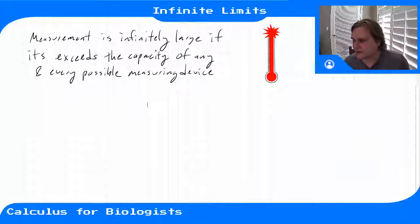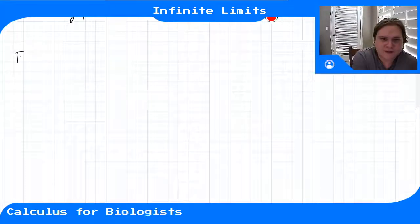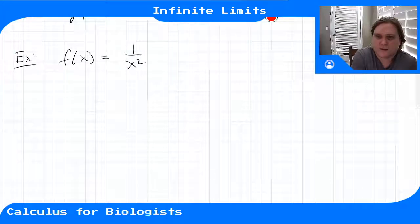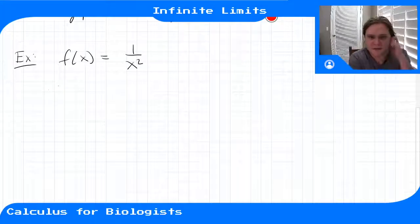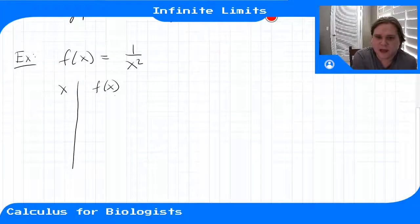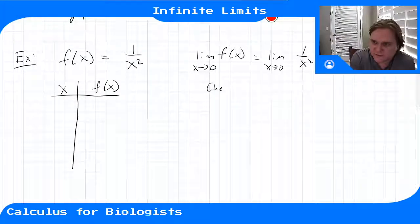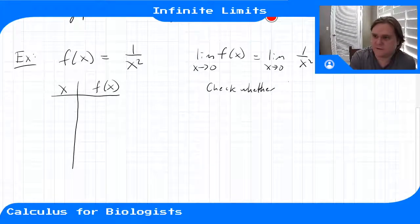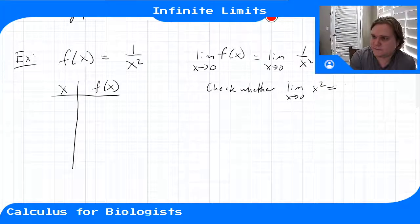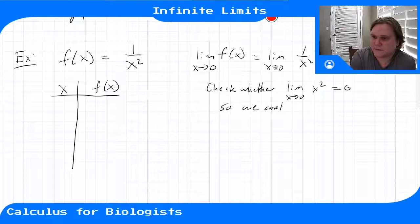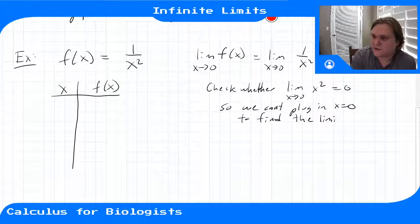Let's start with a function that gets infinitely big at a point. An example of that would be f(x) = 1 over x squared. If you were to look at x versus the function near zero, the limit of this function as x goes to 0 is the limit as x goes to 0 of 1 over x squared. In the previous video, I said you have to check whether the limit on the bottom is 0 — and it is 0, so we can't plug in x equals 0 to find the limit. We're not allowed to do that because then we'd be dividing by 0.